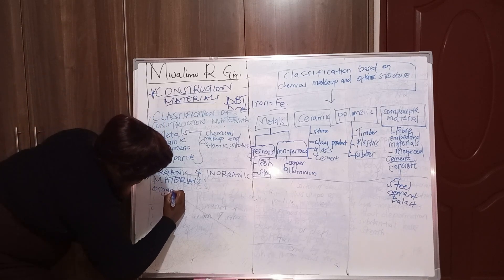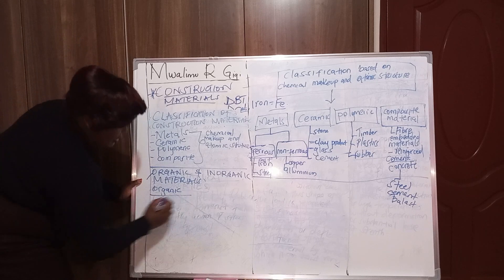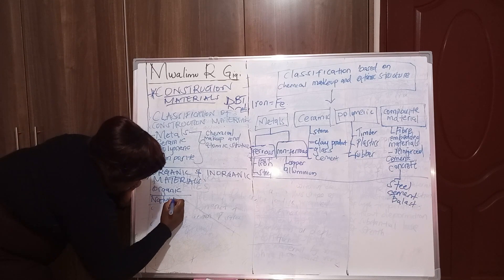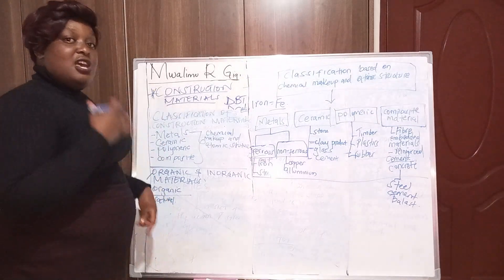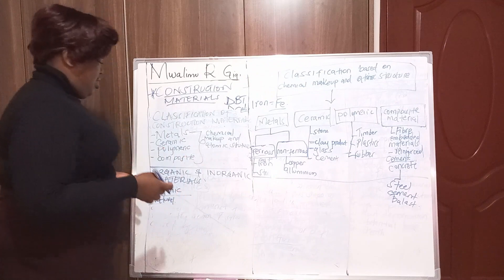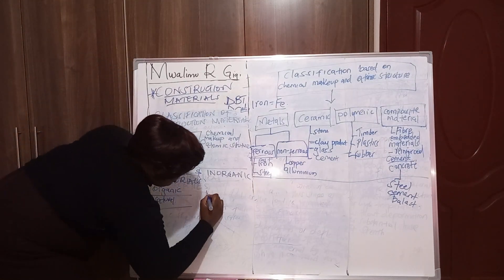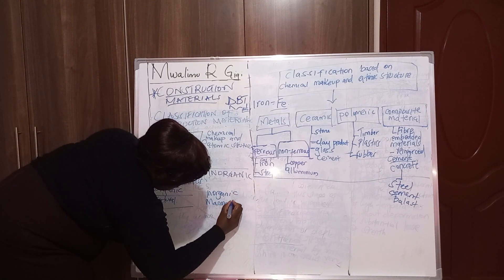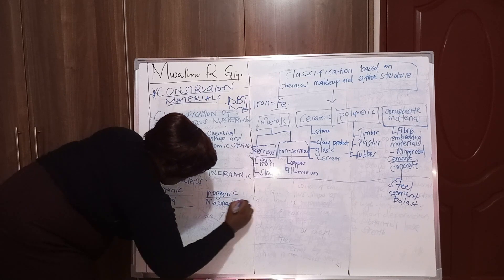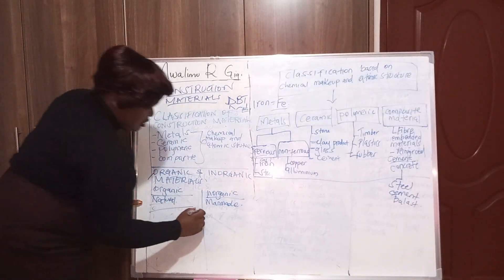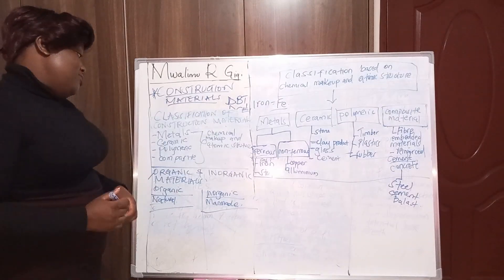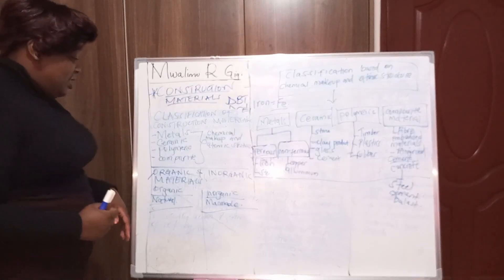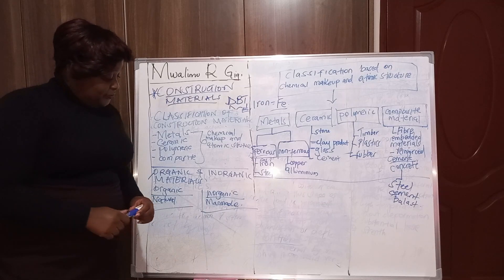Organic materials are basically natural — they exist naturally on the earth's surface. Inorganic materials, on the other hand, are man-made. So the key distinction is natural versus man-made.